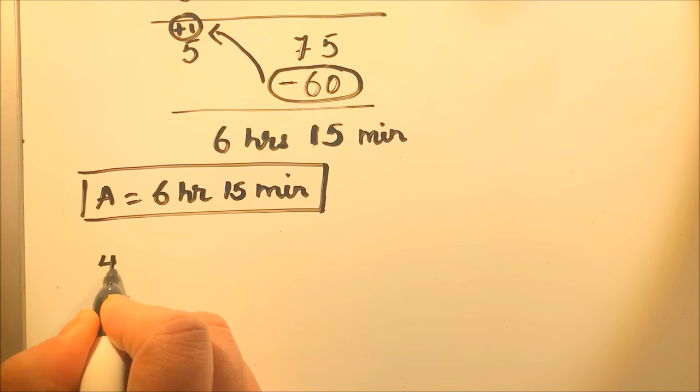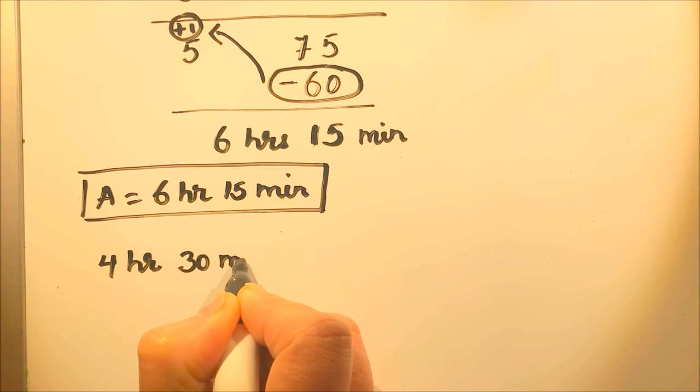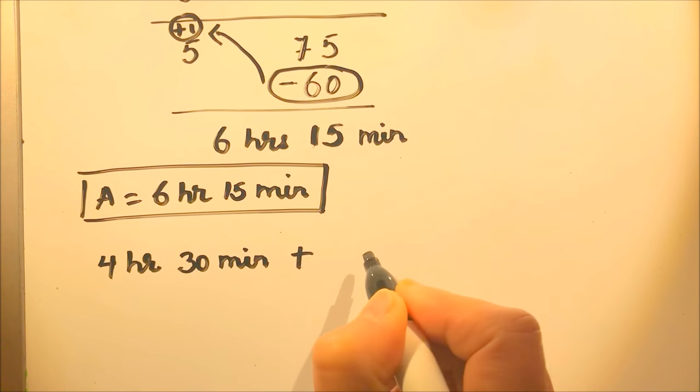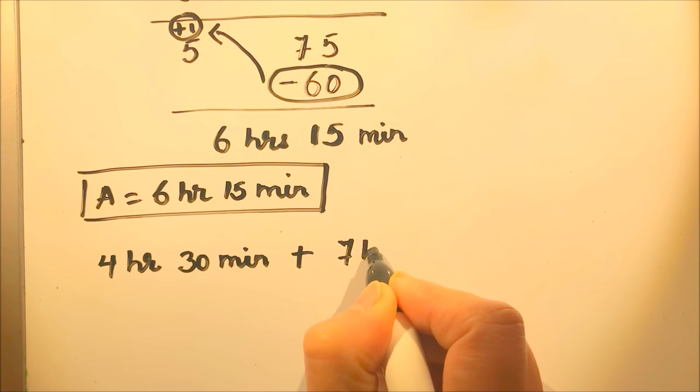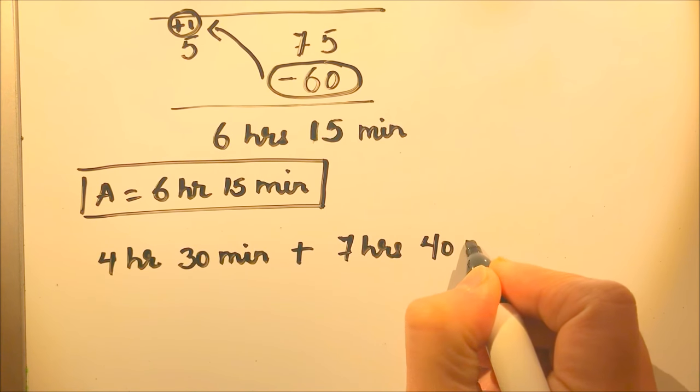Here we have, suppose we have 4 hours, 30 minutes and we need to add it to 7 hours, 40 minutes.